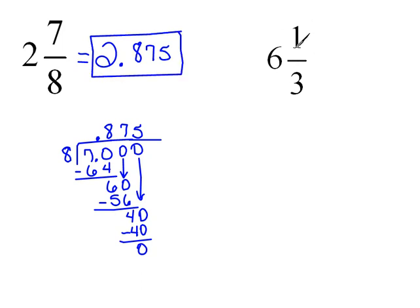Alright, let's try another one here. Here we have 6 and 1 third. So again, 6 being the whole number part will be the exact same thing in the decimal equivalent. It will be the whole number part, the part to the left of the decimal. So the only thing really we need to convert is the 1 third.